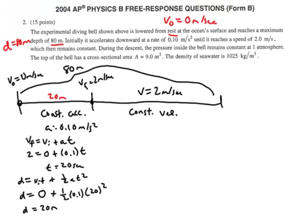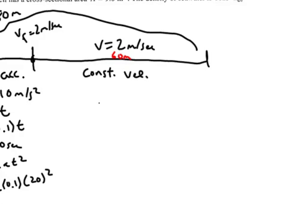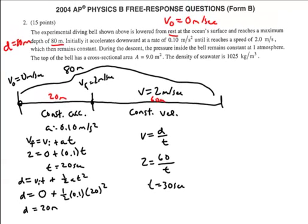Now I can deduce: if the whole trip is 80 meters and the constant-acceleration phase was 20 meters, then the second part must be 60 meters. For Part 2, using velocity equals displacement over time with constant velocity: 2 equals 60 over T, so T equals 30 seconds. Total time: 20 seconds for Part 1 plus 30 seconds for Part 2 equals 50 seconds total. That is one of the toughest problems on the AP exam — constant acceleration transitioning to constant velocity.